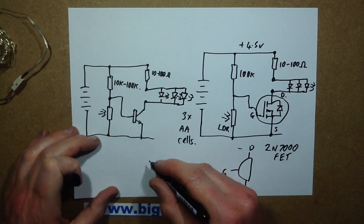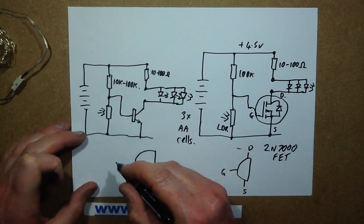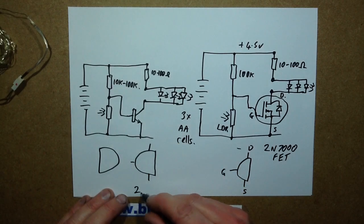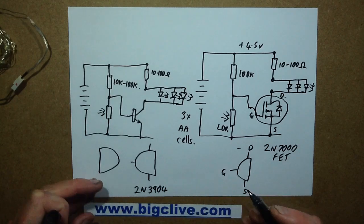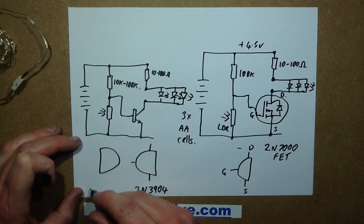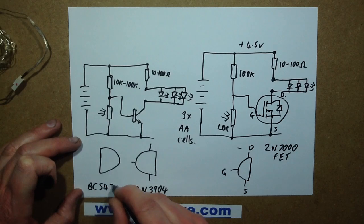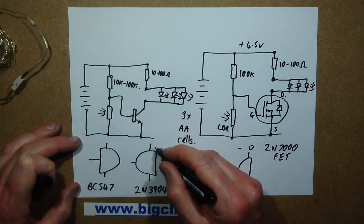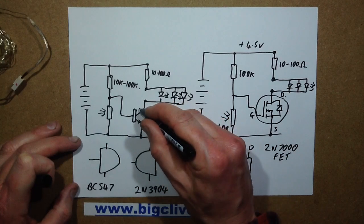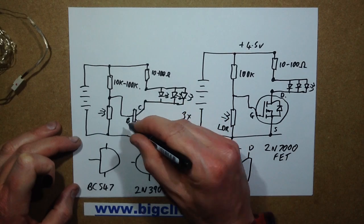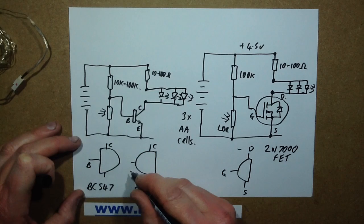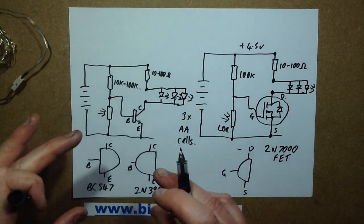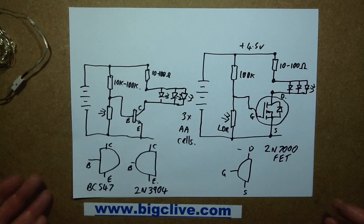If you've got a 2N3904, which is a very popular transistor in America I believe, and in the UK we like our BC547. That's going to be collector, emitter, base for one, and collector, base, emitter for the other. These transistors are all viewed from above.